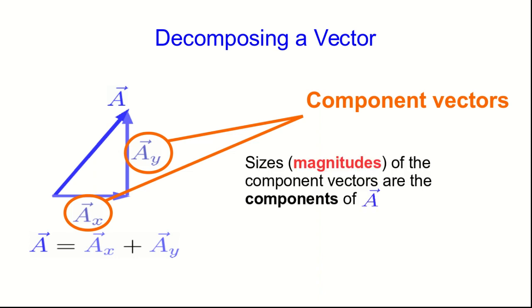The sizes or magnitudes of the component vectors are what we call the components of a. So the notation is that ax vector and ay vector are the component vectors which add up to give a. And ax and ay which are scalars are the components.